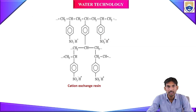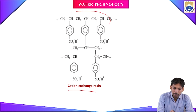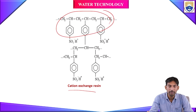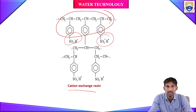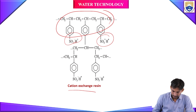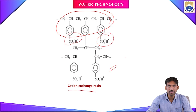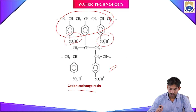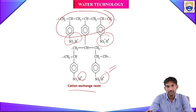This is the polymer structure of a cation exchange resin with functional groups –SO₃H. These –SO₃⁻H⁺ groups are present on the resin, and the H⁺ ion is capable of exchanging the positive ions present in the water.